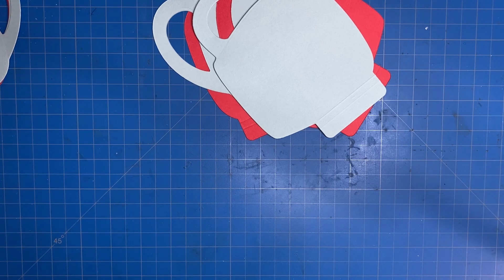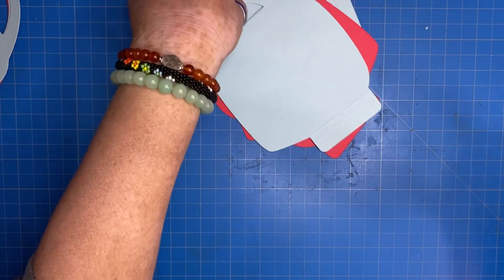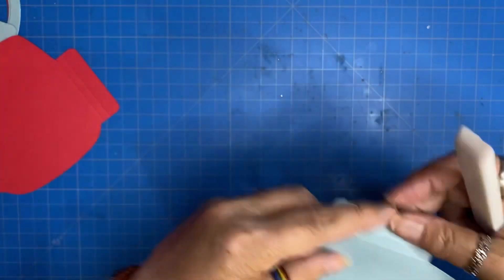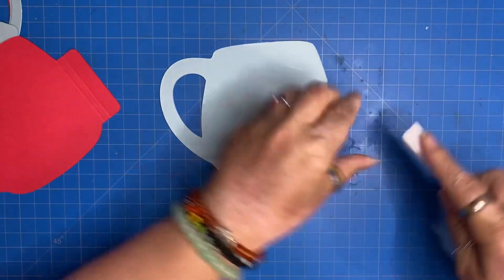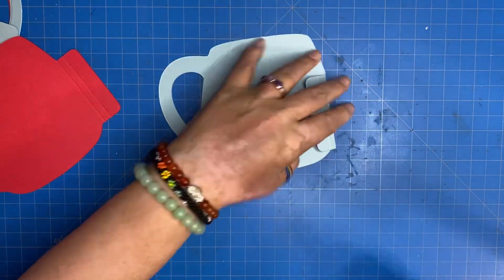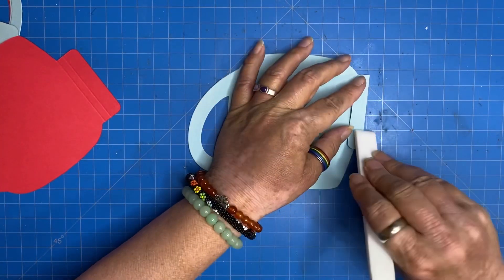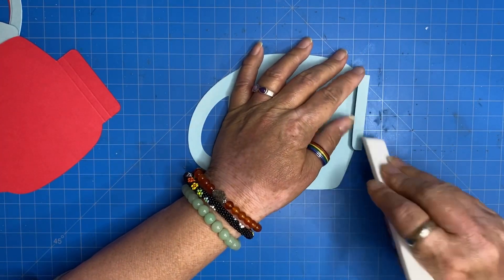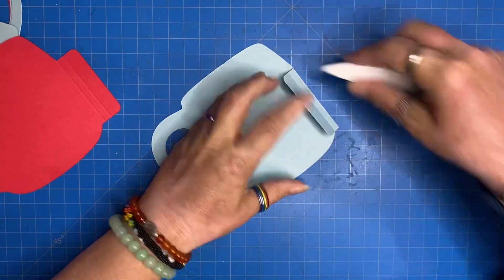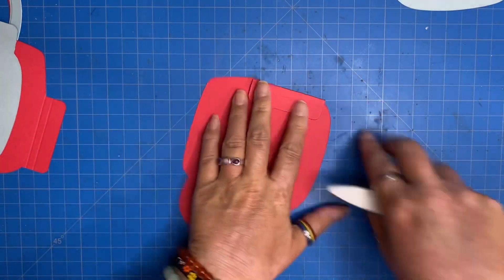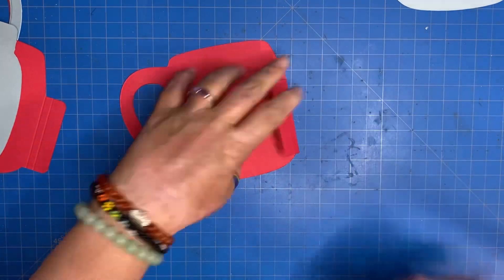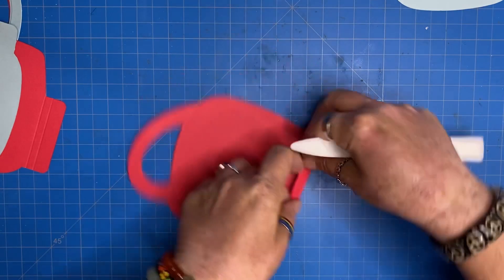I'm going to go ahead and burnish my score lines really well. Right now, you're just trying to fold and really crease those score lines. Don't worry about which direction they end up in right now because we'll fix that as we glue.